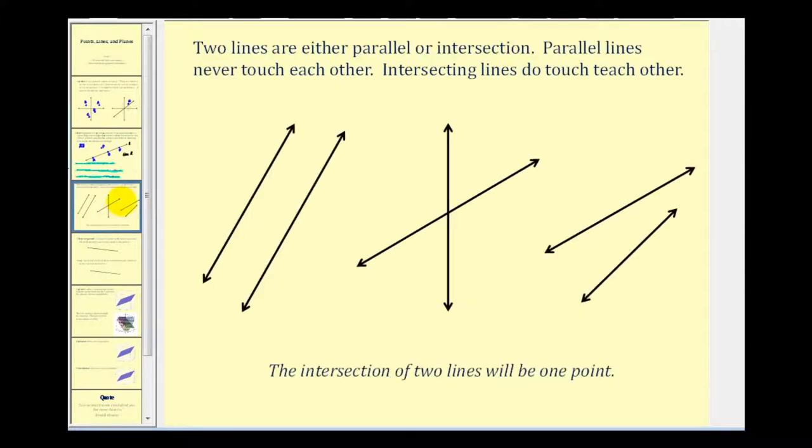Now when we graph two lines at the same time in two dimensions, we either have something called parallel lines or intersecting lines. Parallel lines never touch each other as we see pictured here on the left and intersecting lines do touch each other at some point. So for these two lines, they're intersecting and we see the point of intersection. And these two lines, even though we don't see where the point of intersection would be because it would be off the screen, we can tell they will intersect at some point.